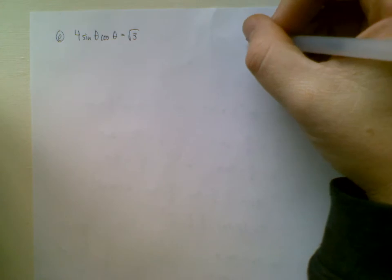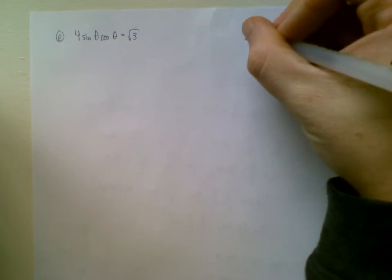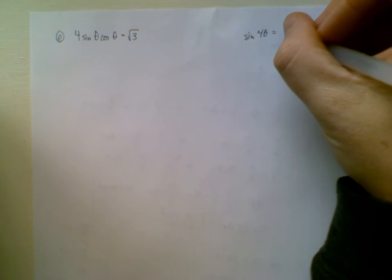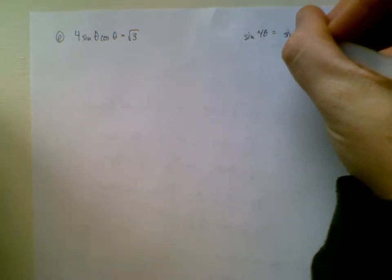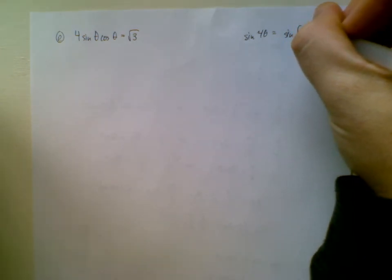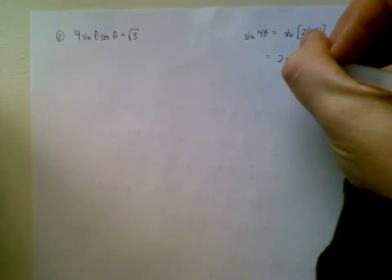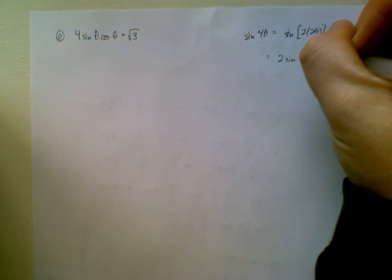Okay, sine 4 theta, well, it's different, right? Sine 4, just as an aside, sine 4 theta would be sine of 2 times 2 theta. So that would be 2 sine 2 theta cosine 2 theta.